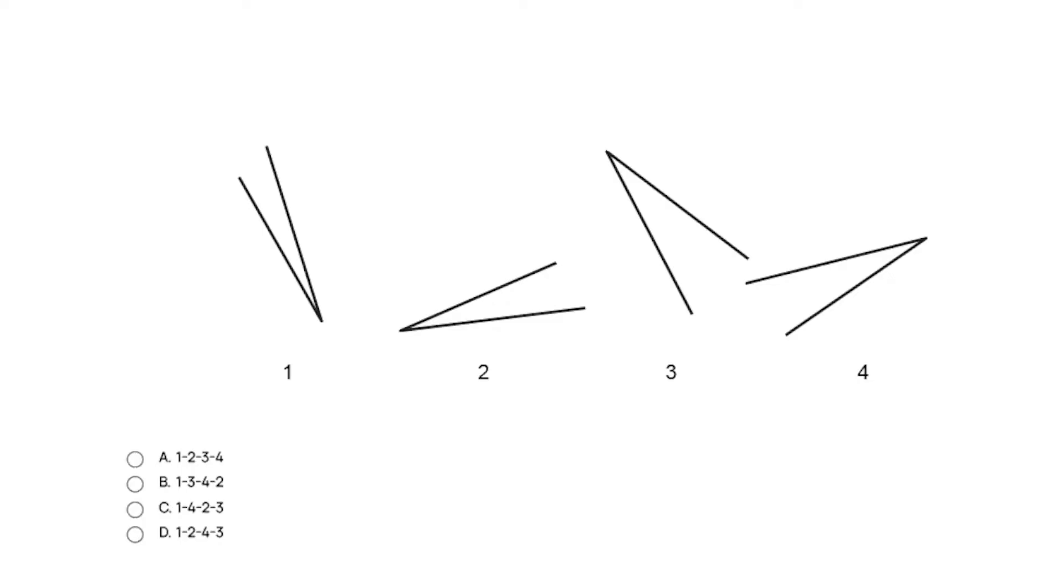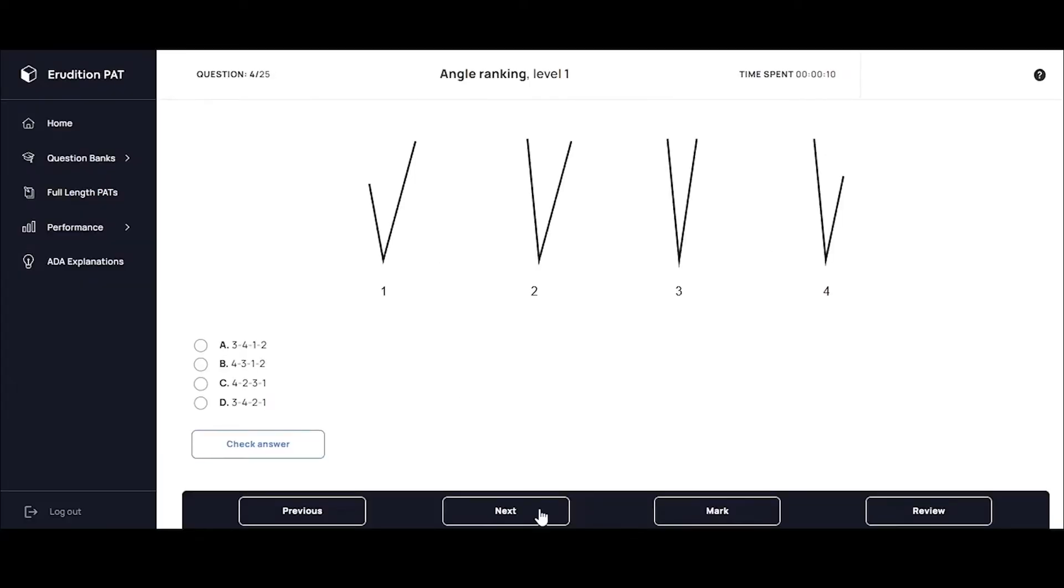Angle ranking problems are the ones where you have a set of angles and you have to order them from the smallest to the largest. These problems can be pretty daunting. They tend to be kind of boring and tedious and you have to look at angle after angle after angle and your eyes just glaze over.